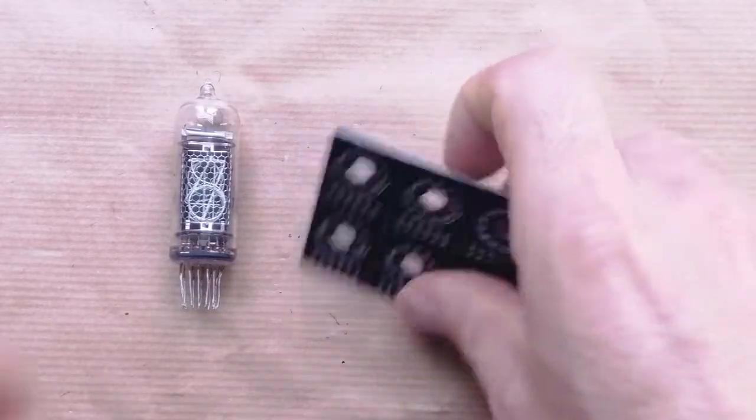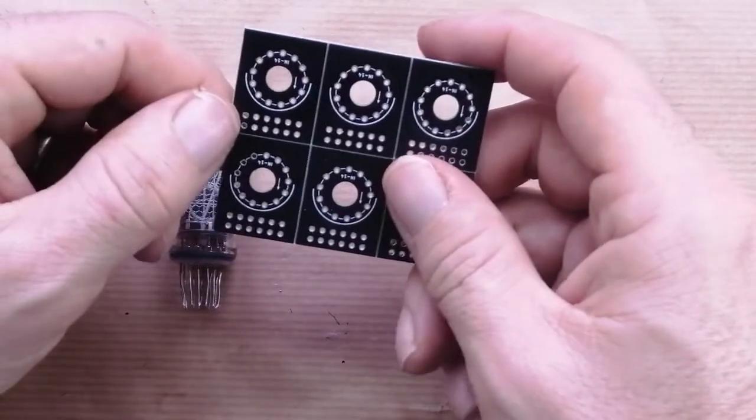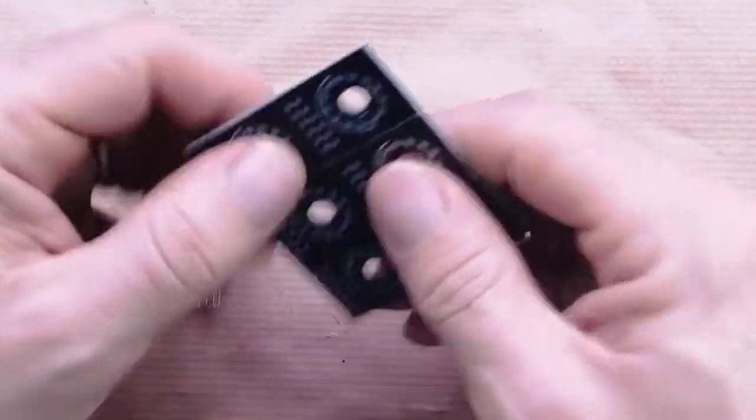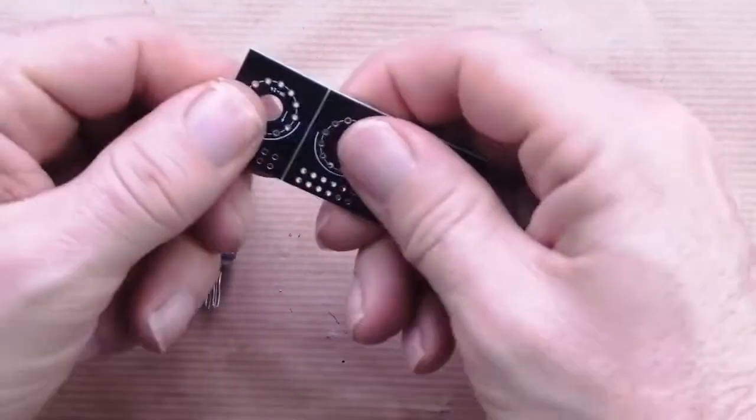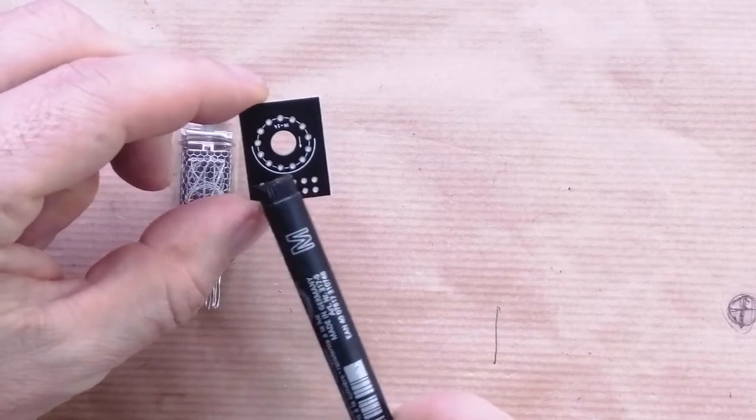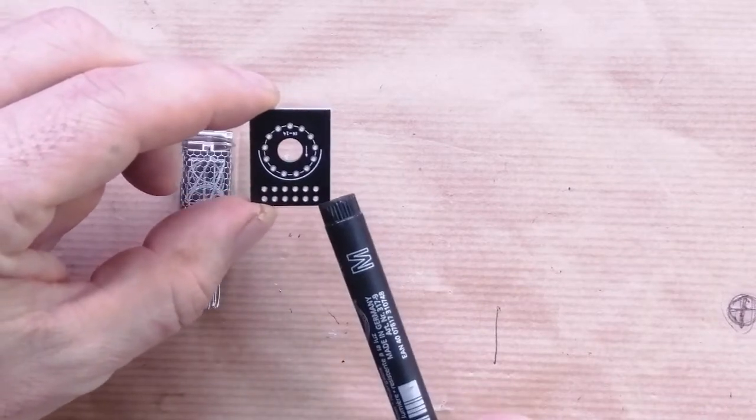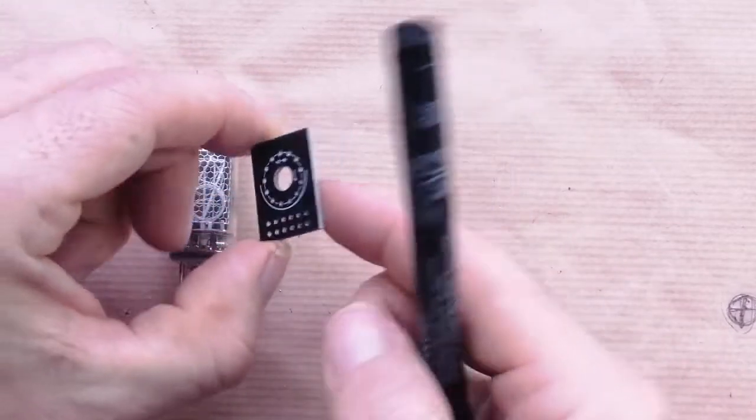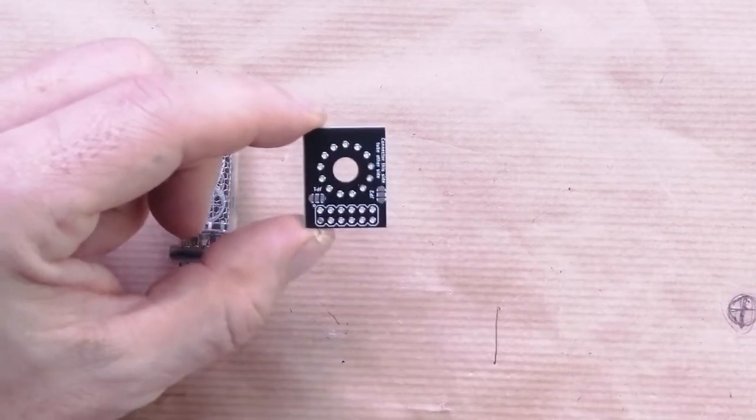So next step is we're going to mount the tubes on the tube holder boards. You have to split these up into individual units and here especially note the silkscreen, so tube goes on this side, connector goes on this side.